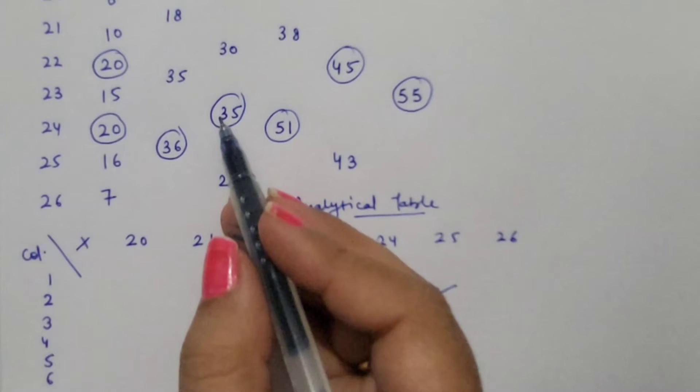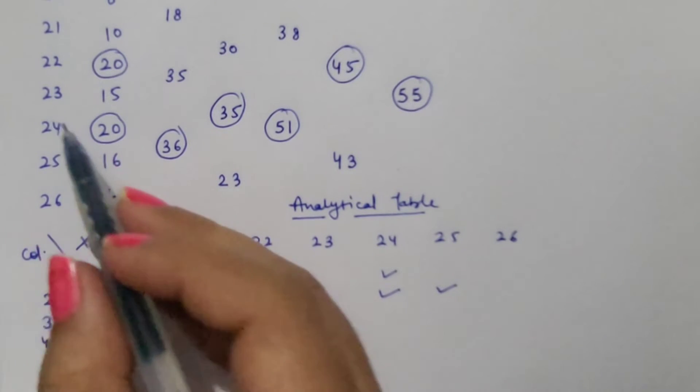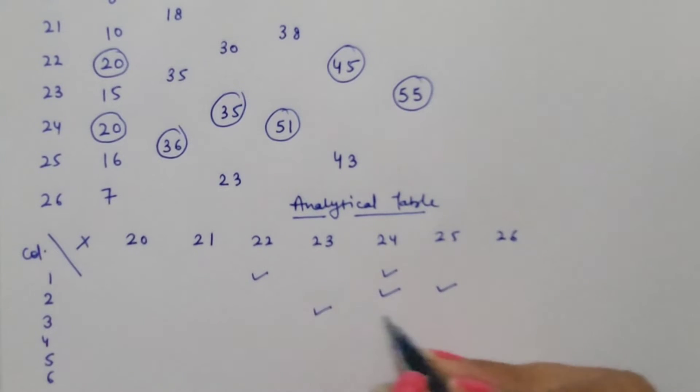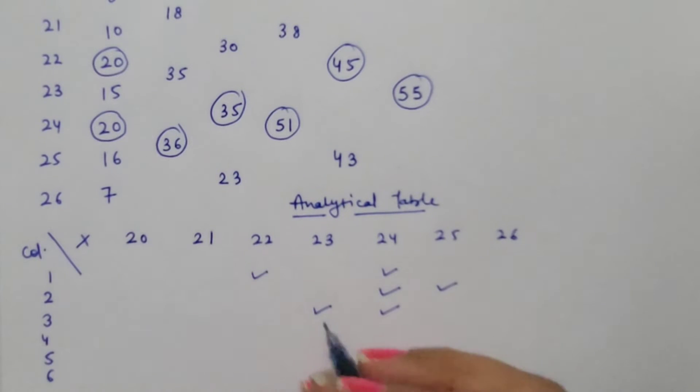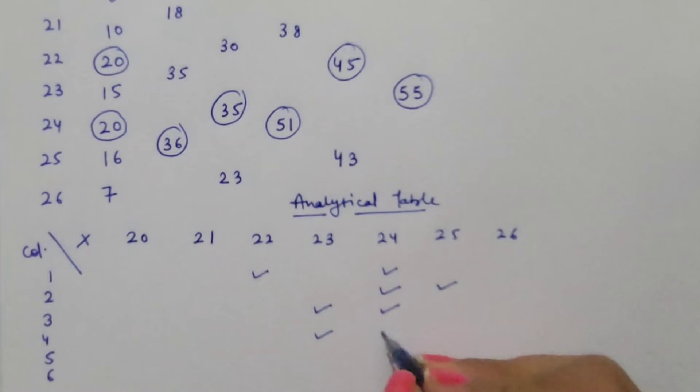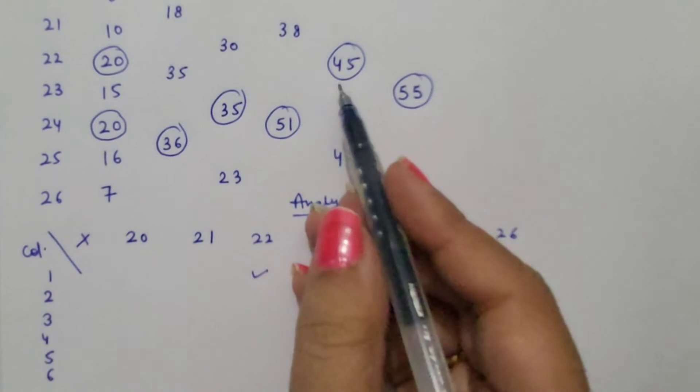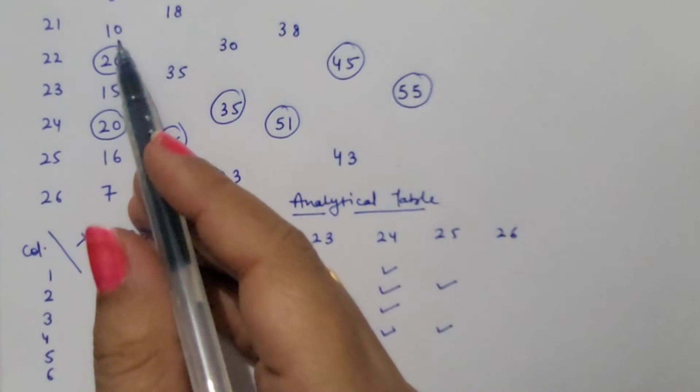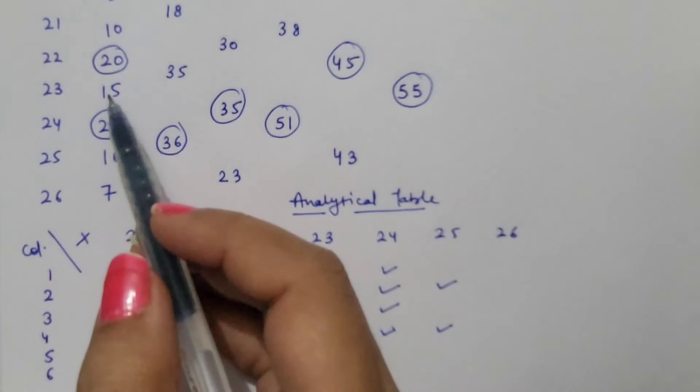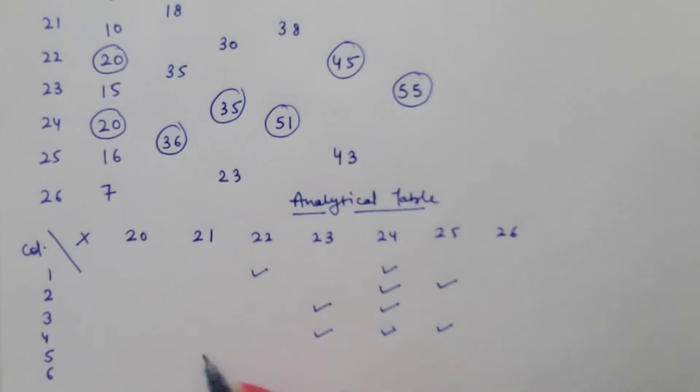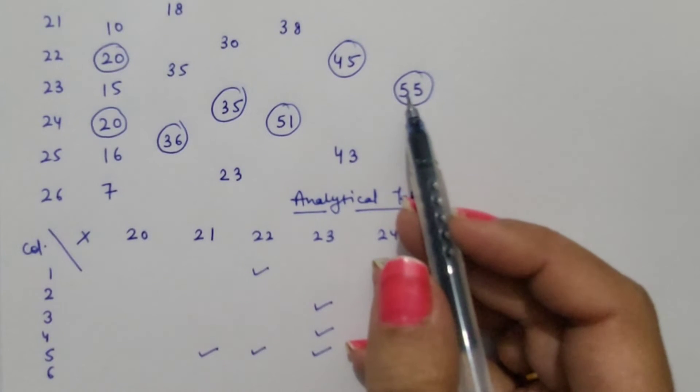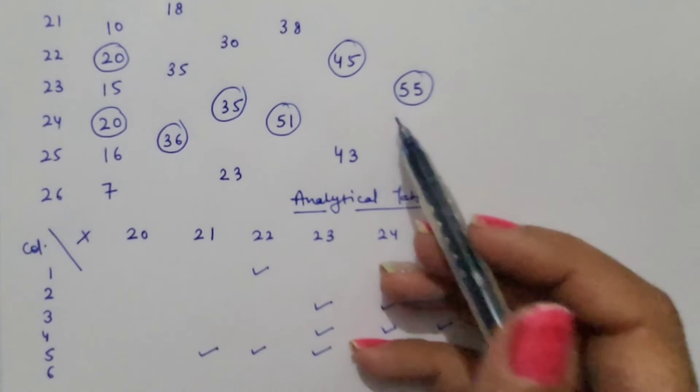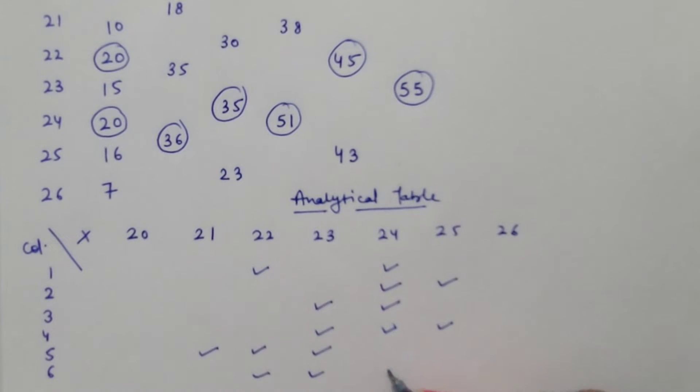Then 35, which is 20 and 15, correspond to 23 and 24. Now 51, which is 15, 20, and 16: 23, 24, and 25. 45, which is 2 plus 3 plus 4, means 20, 10, and 15: 21, 22, and 23. In the last is 55, 3 plus 4 plus 5: 22, 23, 24.